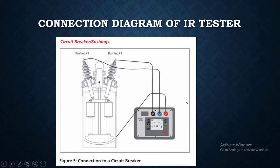Here you can see the connection diagram for the circuit breaker, or for example the bushing. The negative is connected to the object under test, the positive is connected to the ground, and the guard terminal is connected to the bushing — in order to check the leakage current.